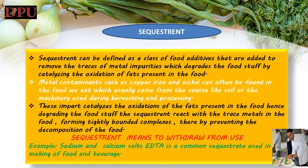Sequestrant: sequestrant literally means to withdraw from use. A sequestrant can be defined as a class of food additives that are added to remove traces of metal impurities which degrade the foodstuff by catalyzing the oxidation of fats present in the food. Metal contaminants such as copper, iron and nickel can often be found in the food we eat, usually coming from sources like soil or machinery used during harvesting and processing. These metallic impurities catalyze the oxidation of the fats present in the food, hence degrading the foodstuff. The sequestrant reacts with the trace metals in the food, forming tightly bounded complexes, thereby preventing the decomposition of the food. Example: sodium and calcium salts of EDTA are common sequestrants used in making food and beverages.